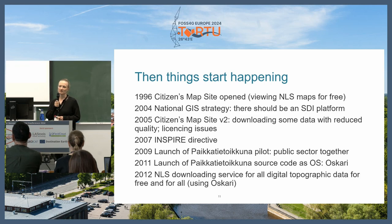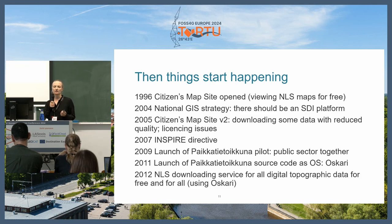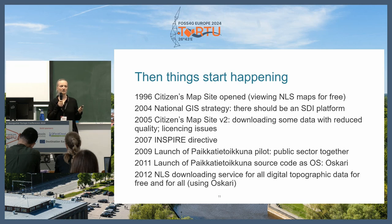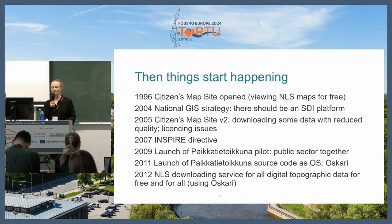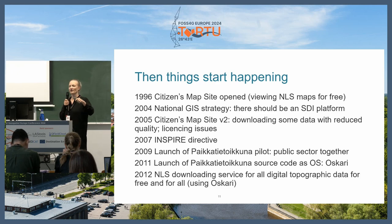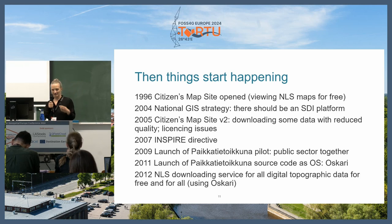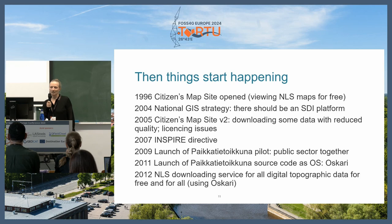So in 1996 we got the map site opened — viewing National Land Survey map data for free, with not-so-good quality, was possible. People got very excited. In 2004 there was a national GIS strategy that said there should be a platform to explain spatial data infrastructure for people. While this list looks very logical, there was lots of lobbying and networking of individuals in the background. You would have to talk to the right people to convince them that yes, this is a good thing, this is safe, this is for the benefit of society.